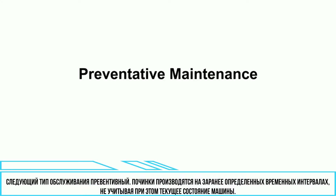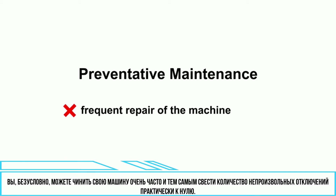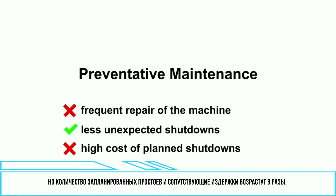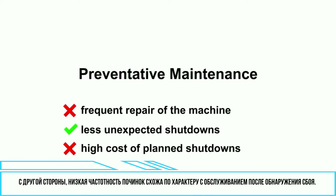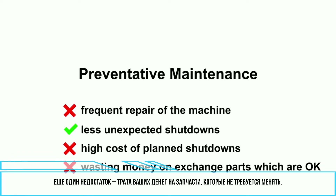The second type of maintenance is preventative maintenance. Repairs are done at predetermined intervals, regardless of the actual condition. Here is a big problem with the repair frequency. You could repair the machine very frequently and your unexpected shutdowns could be reduced to near zero, but your planned shutdowns and the costs would of course be enormous. On the other hand, very low repair frequency is a similar approach to maintenance after failure. Another disadvantage is that you are wasting your money on exchanged parts which are still okay.